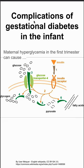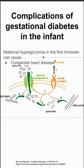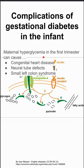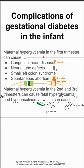These are the complications of gestational diabetes in the infant. In the first trimester, if mom has hyperglycemia, it can cause congenital heart disease in the infant, as well as neural tube defects, small left colon syndrome, and spontaneous abortion.